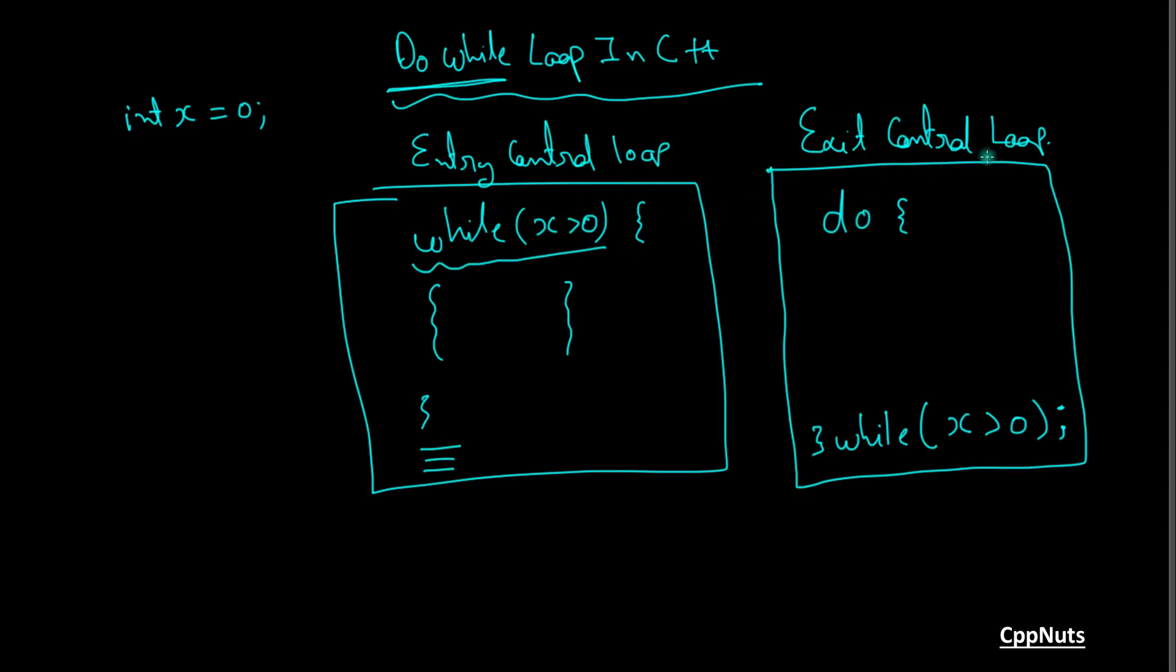But this is called exit control loop because the condition checking is happening at exit time. So let's suppose this is the statement before executing your do while loop and as it is the same value for x, we will come here and we will execute whatever is there inside this loop one time.